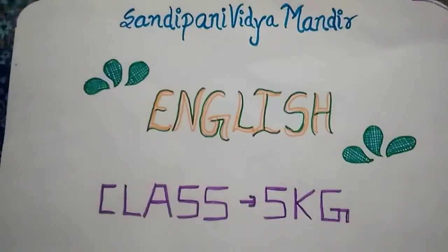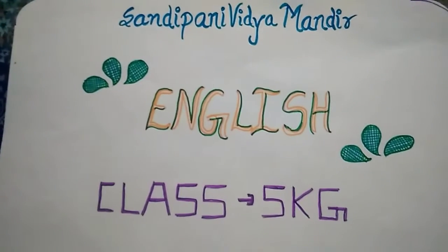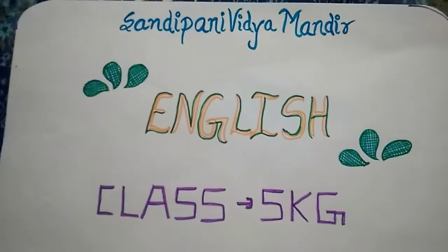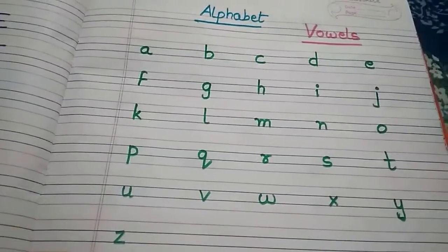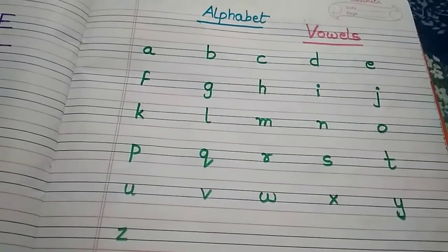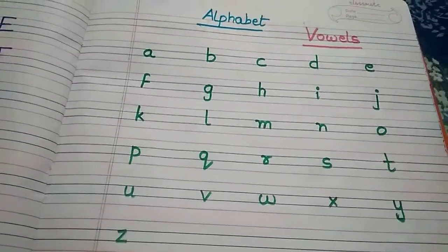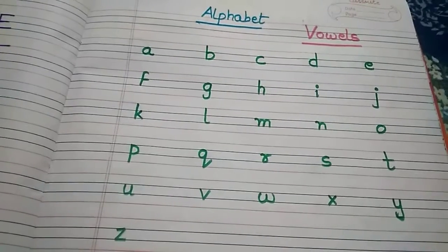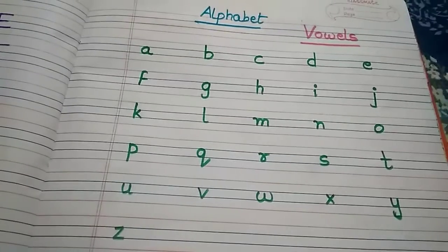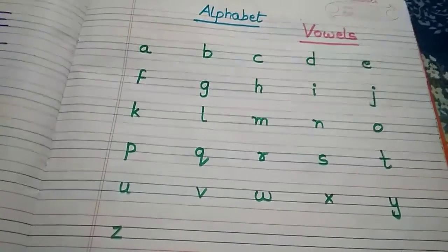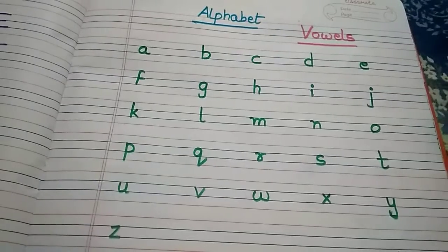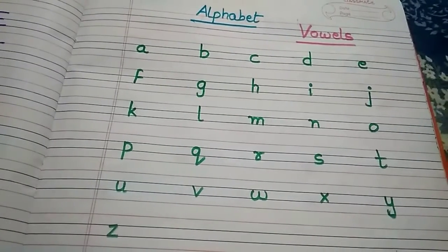Hello children, how are you? Are you all fine? Okay, today we will learn English. Children, in the previous video we learned about alphabets. Alphabet is divided into two parts: first one is vowel and second one is consonants. Now I am going to tell you what are vowels. There are five vowels in English alphabet. Let's see what they are.